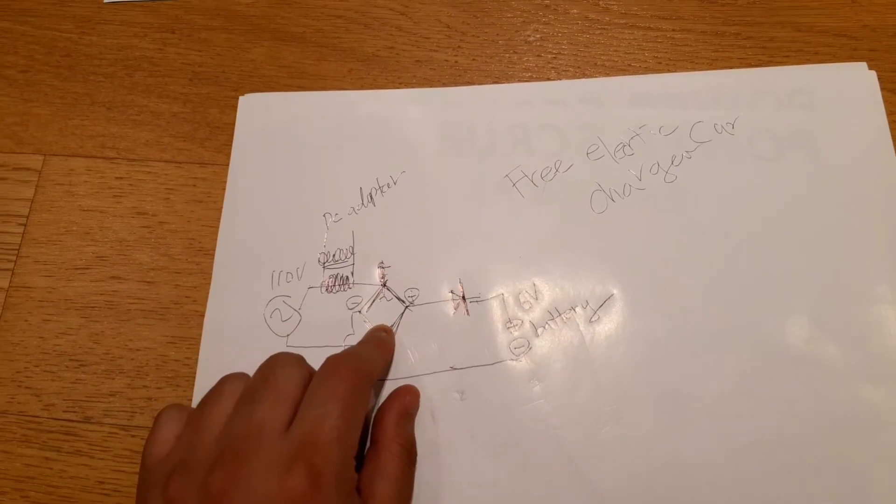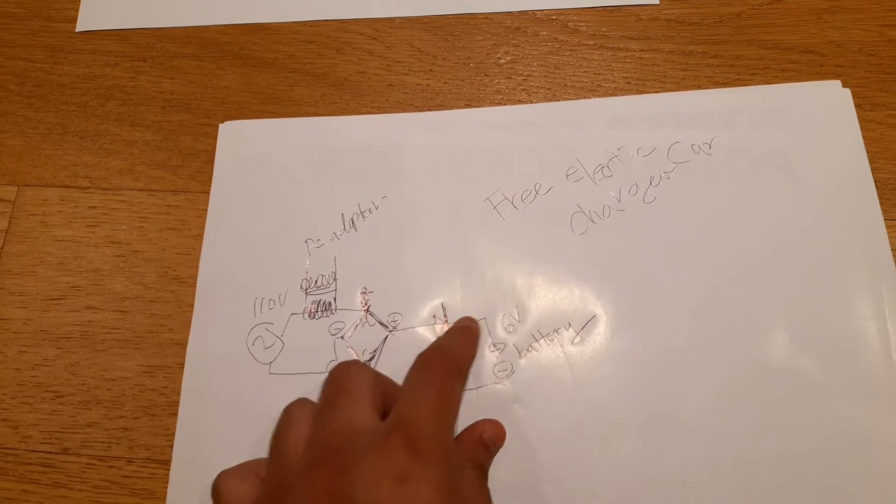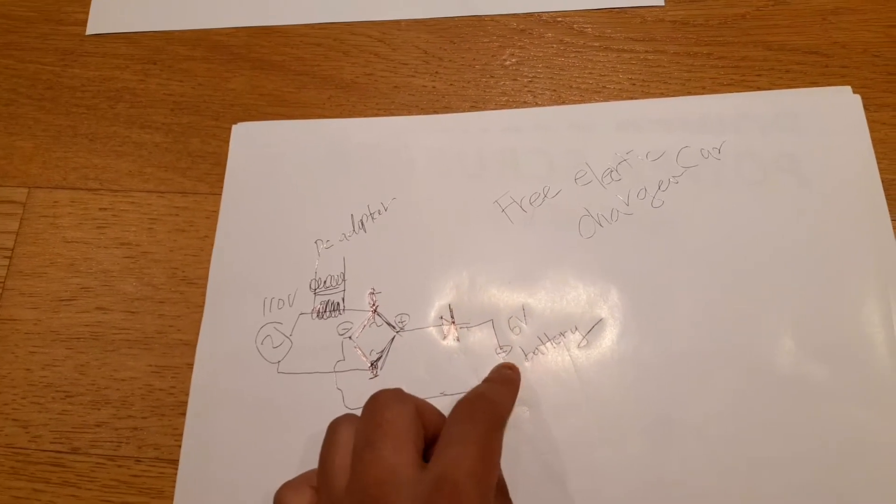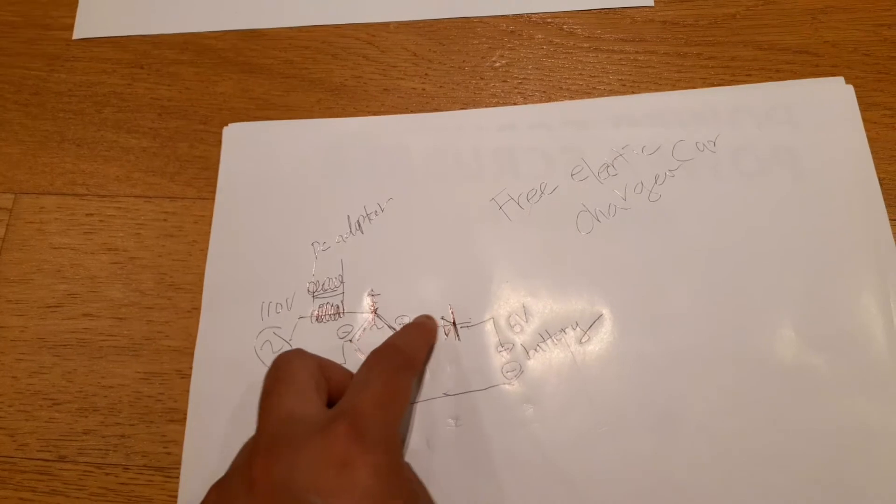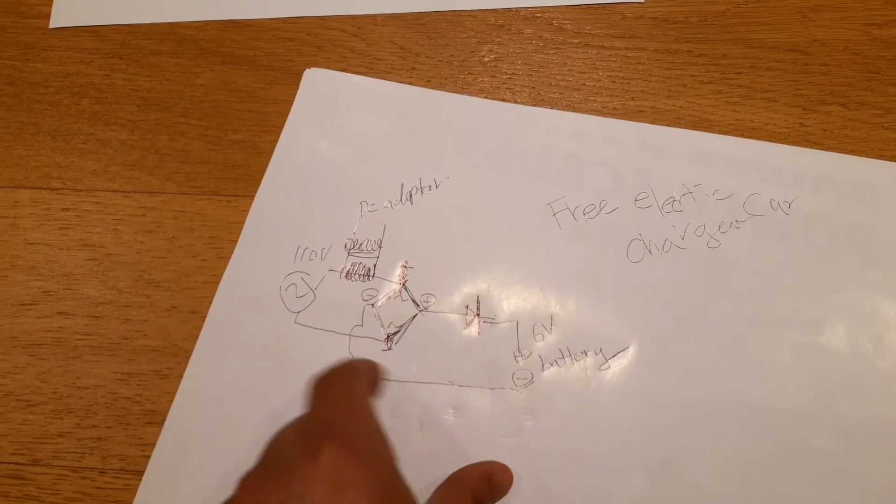And we have a bridge rectifier, and we have a blocking diode, and current passes through a 6 volt battery. Alternating current passes through, this goes like this, and this is one path.